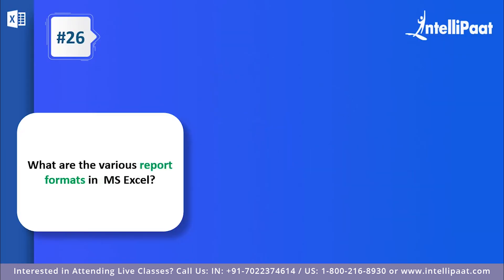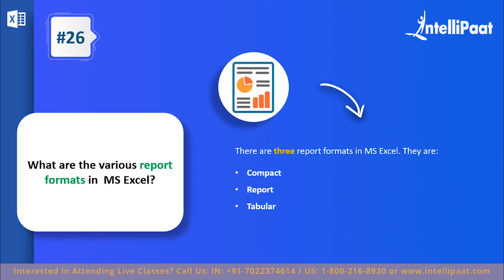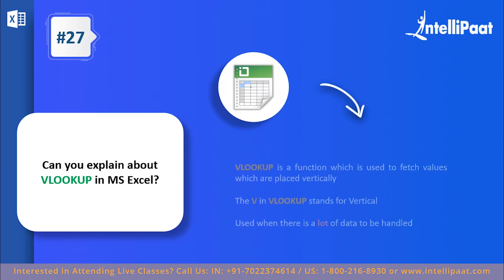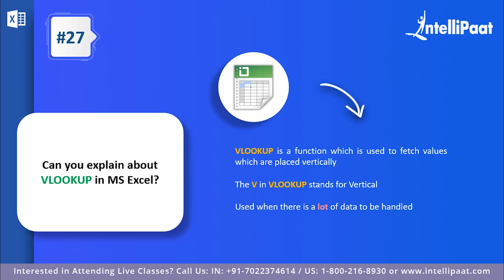Question twenty-six: what are the various report formats in MS Excel? There are three report formats: the tabular report, the compact report, and the general report. Make sure to answer this by mentioning all three. Question twenty-seven: how can you explain VLOOKUP in MS Excel? VLOOKUP is a very interesting function that fetches values placed vertically in columns. The V in VLOOKUP stands for vertical. It is used when there is a lot of data which needs handling, making life very simple for an Excel developer.